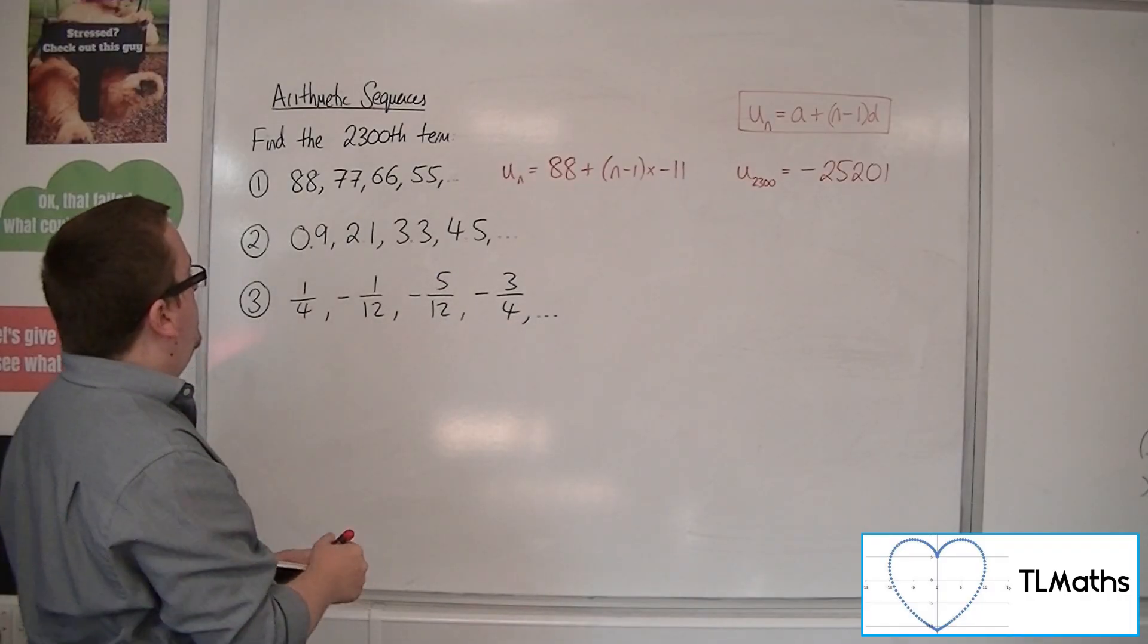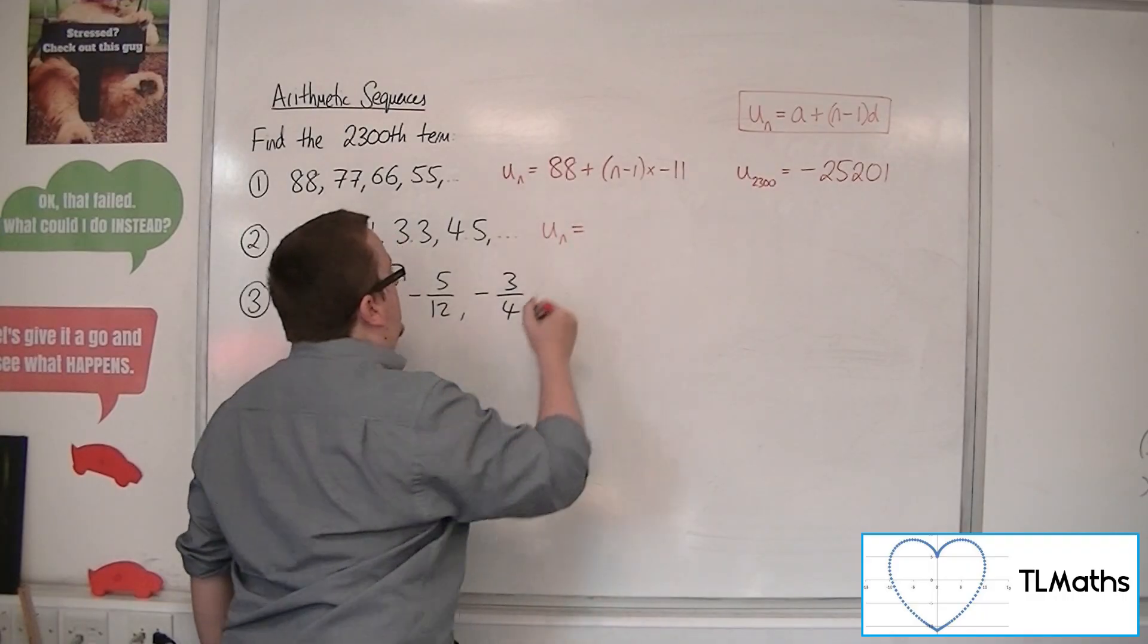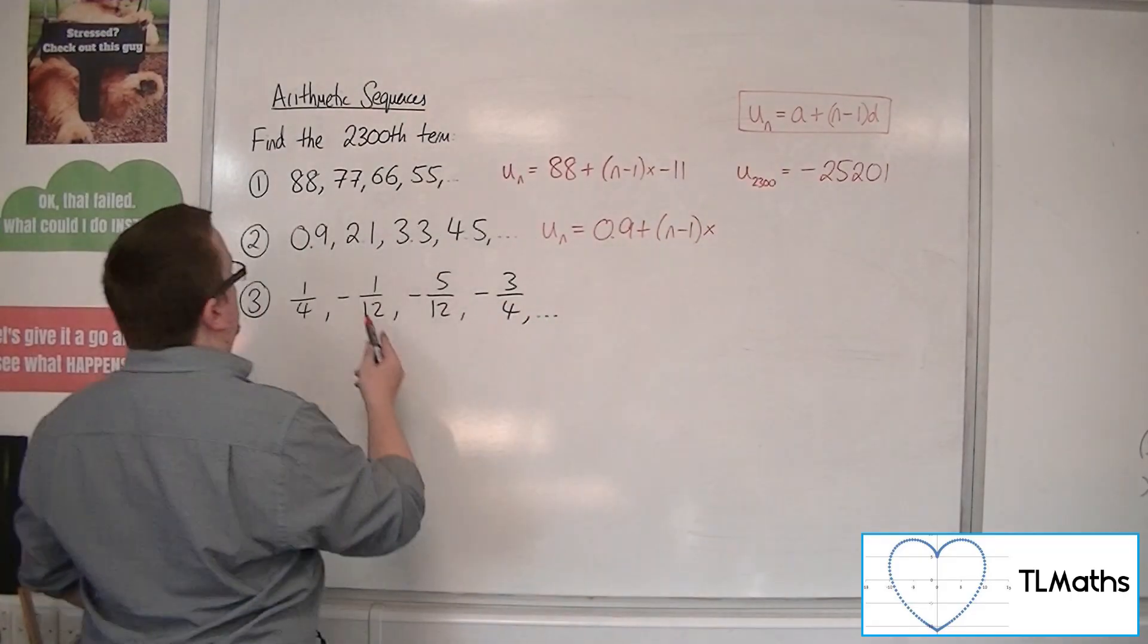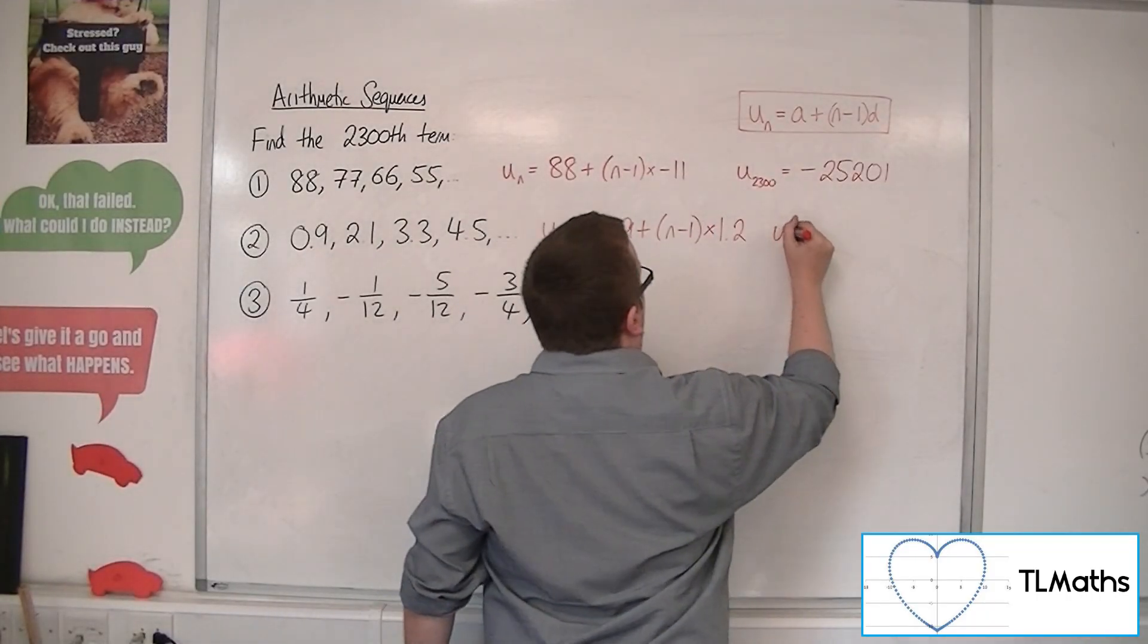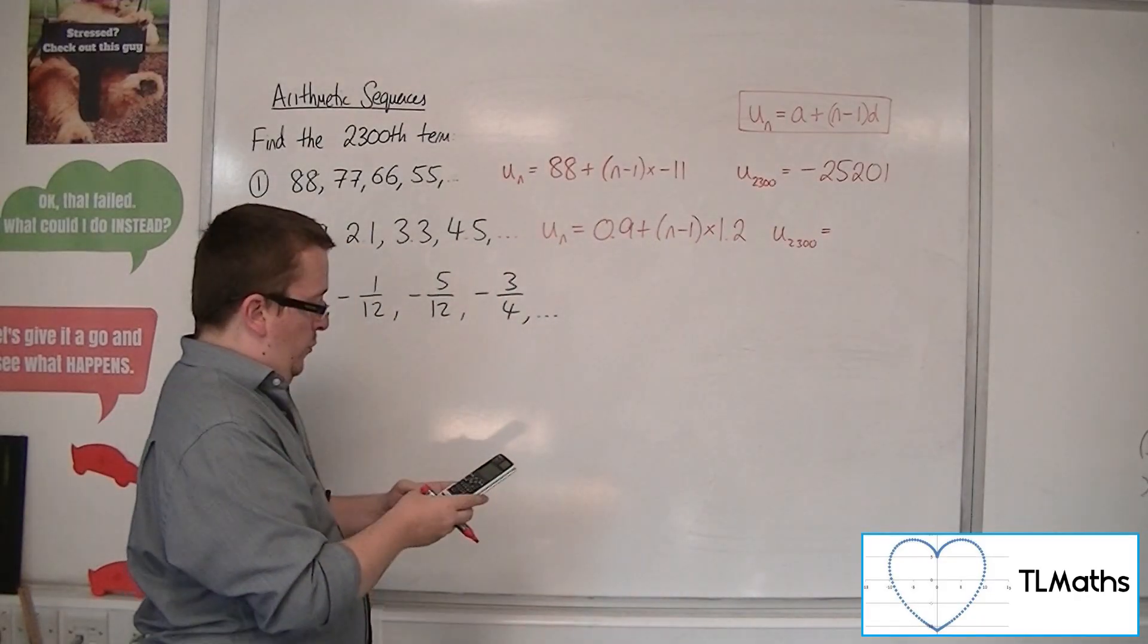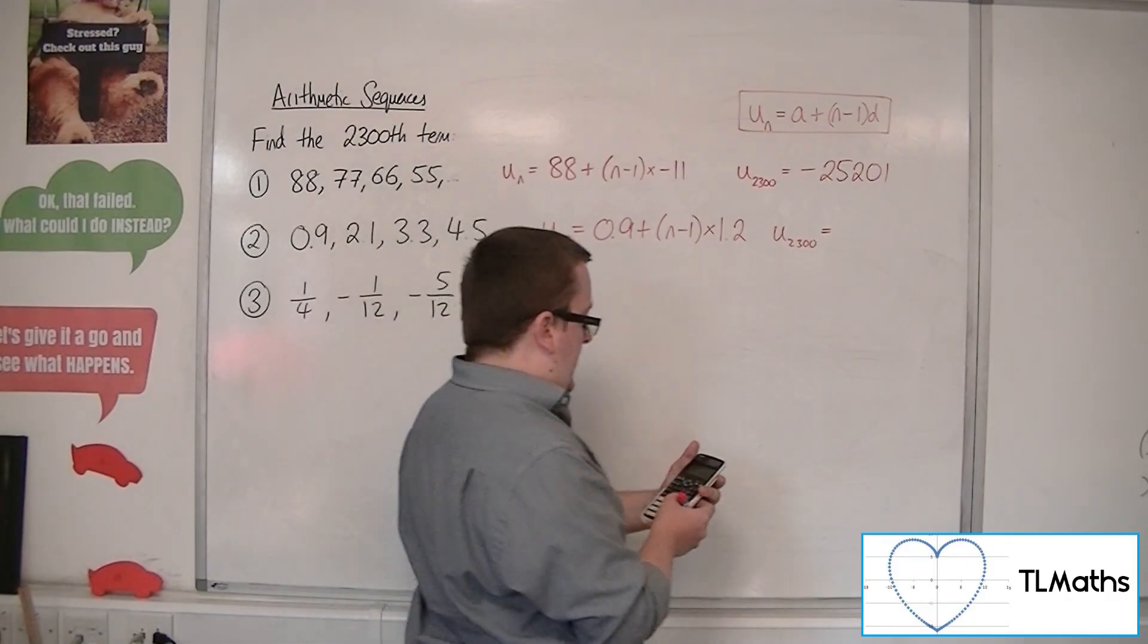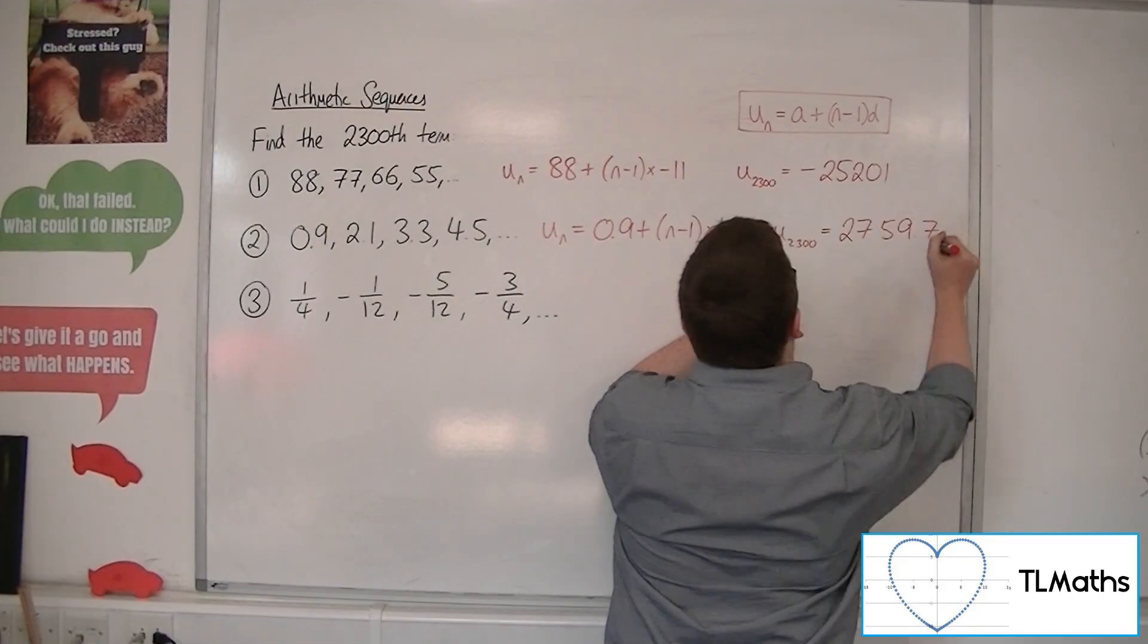For number two, 0.9, 2.1, 3.3, 4.5. The nth term is equal to a, so 0.9, plus n minus 1 times by the common difference. Now this one is going up by 1.2 each time. So u2300, 0.9 plus 2300 take away 1 times by 1.2, gets me 2759.7.